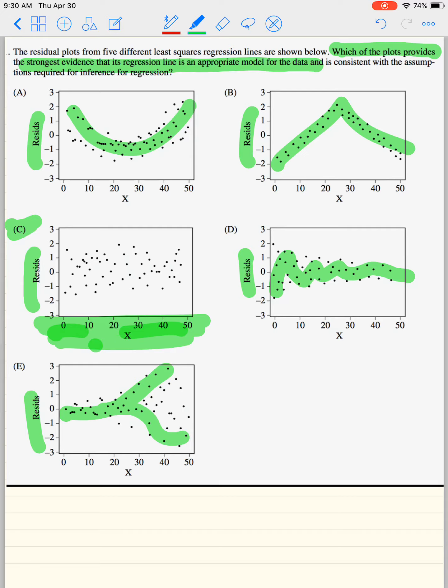So letter C is the strongest. I mean, letter D and E are like, eh, they're okay. But C, you cannot find any pattern. So C is the strongest.